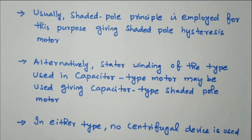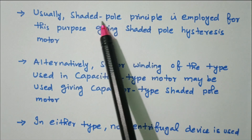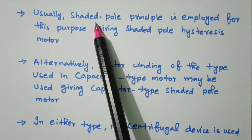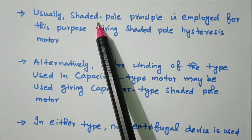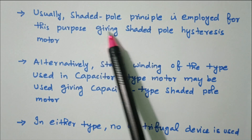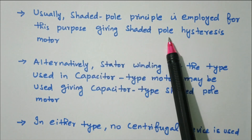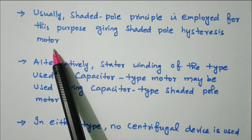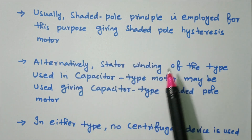Usually, the shaded pole principle is employed. We have one copper coil called a shaded pole. That will produce the phase difference between the windings, which we'll see during the diagram. For this purpose, giving a shaded pole, this is called a shaded pole hysteresis motor.